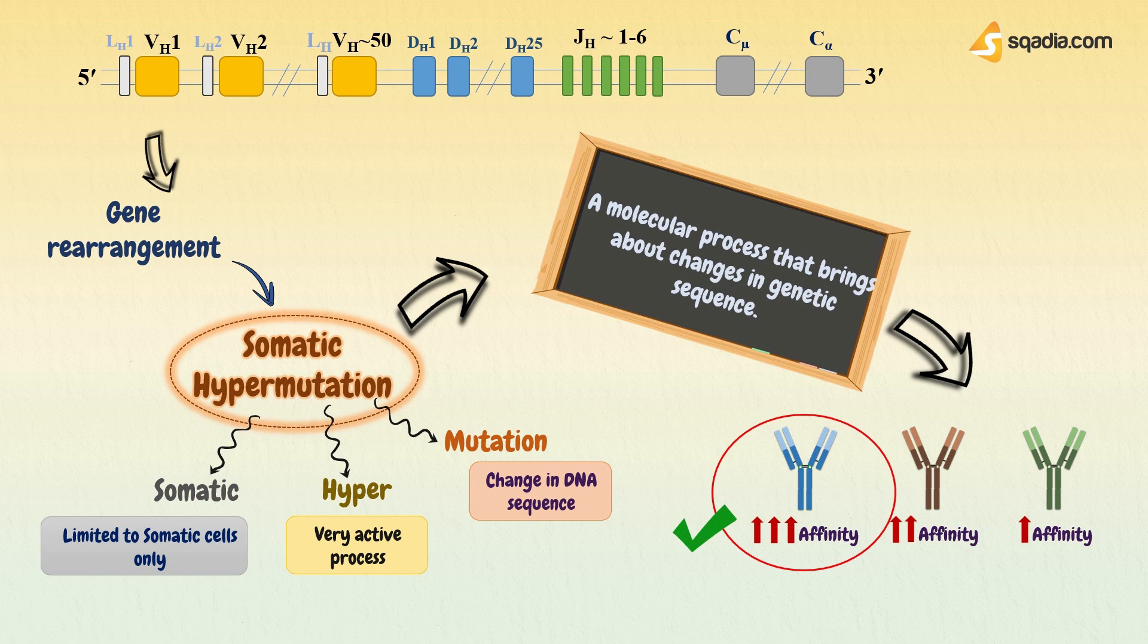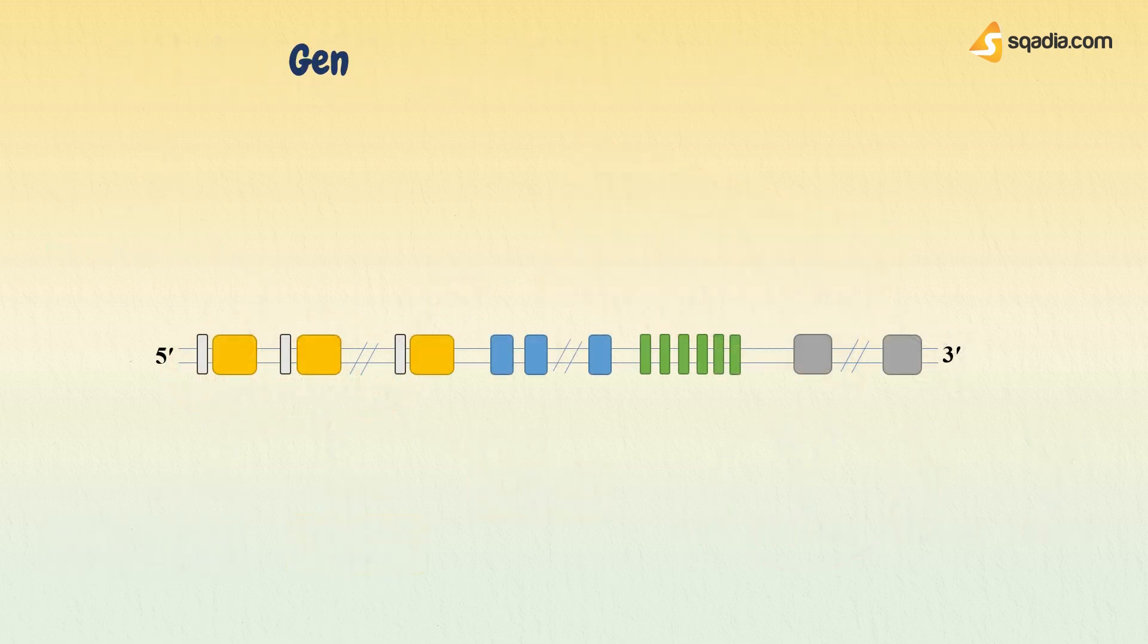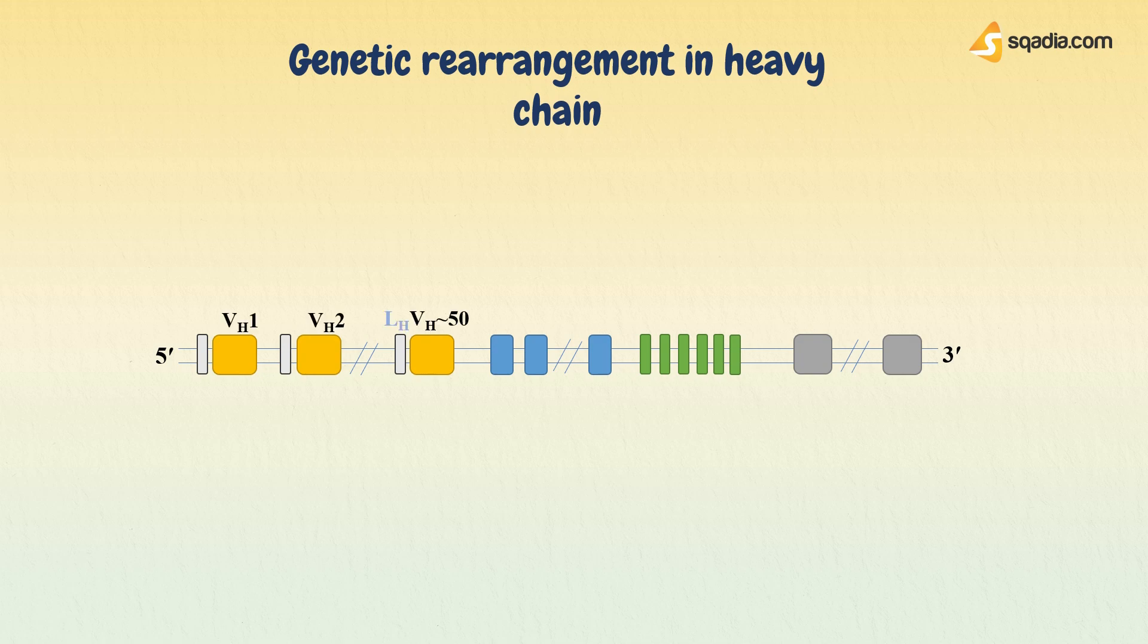Let's see in detail how genetic rearrangement occurs in heavy chain. We know that heavy chain is composed of both variable and constant region domains. The variable region of heavy chain is encoded by V, D, and J gene segments. L-segment leads the whole process, and constant region is encoded by C-segment. This C-segment has a set of genes for all immunoglobulin classes.